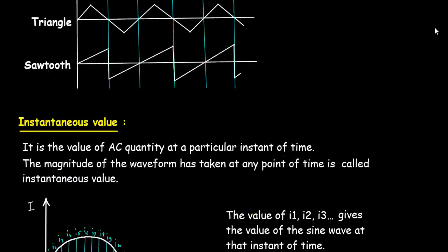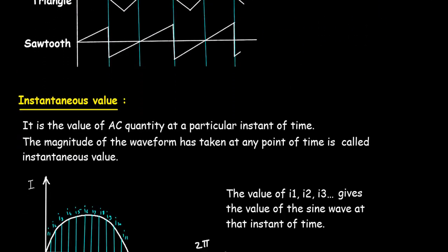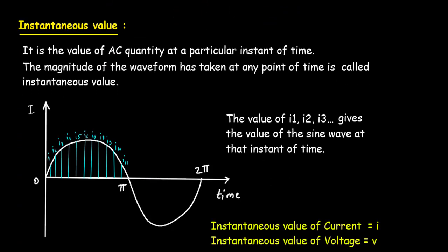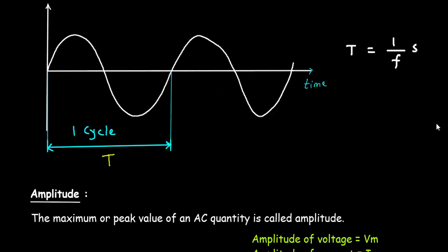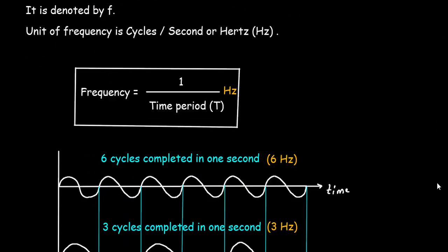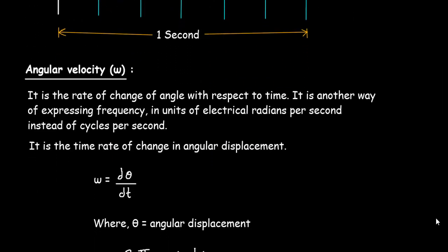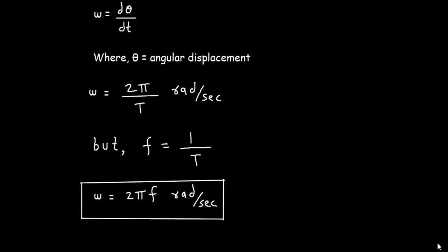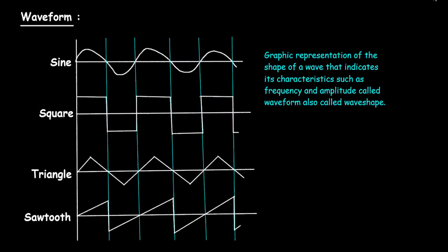So this is all about waveform, instantaneous value, cycle, period, amplitude, frequency, and angular velocity or angular frequency. Don't forget to check out the other videos on this channel, and thanks for watching.